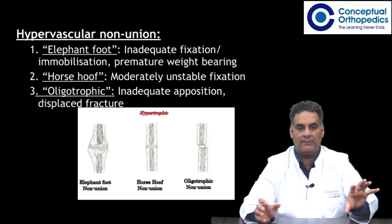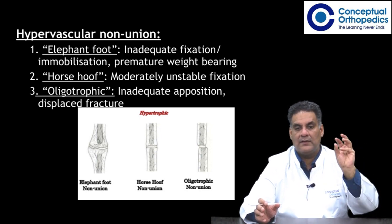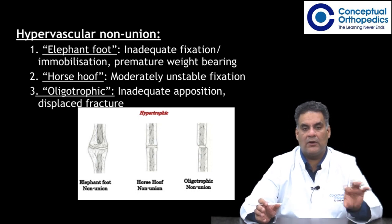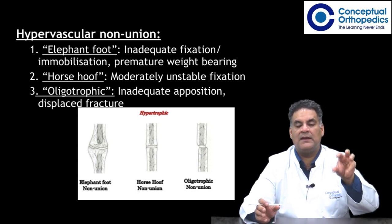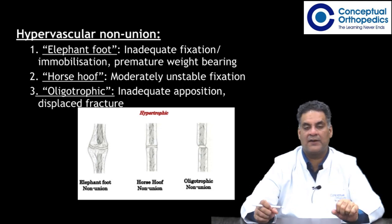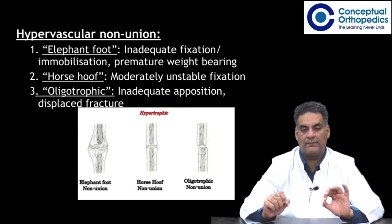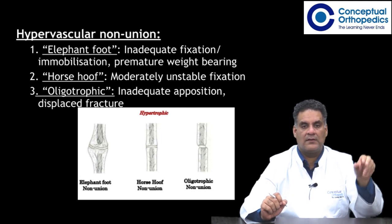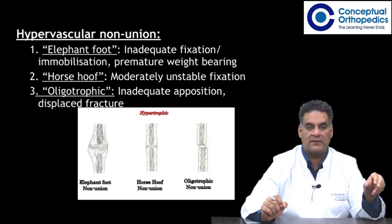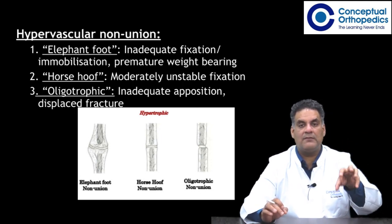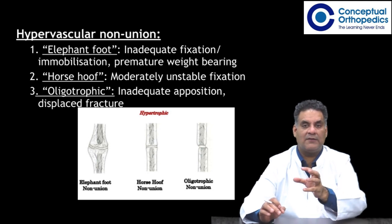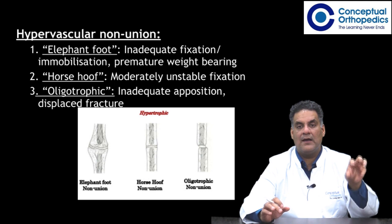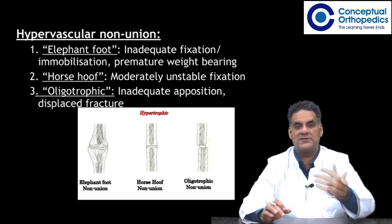The second hypervascular type is horse's hoof, which is due to moderately unstable fixation — elephant foot is markedly unstable, horse's hoof is moderately unstable. The third is oligotrophic, when there is inadequate compression or apposition of the fracture site when fragments are displaced. Oligotrophic, horse's hoof, and elephant foot are all hypervascular; it is the extent of callus or cartilage material available that distinguishes which type is present.